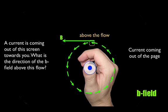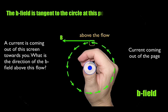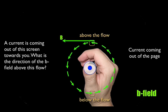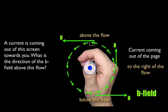You can also ask about other positions around this flow. Below the flow, the B-field is tangent to the circle going from left to right. To the right of the flow, it's tangent to the circle pointing upward. And to the left of the flow, it's tangent to the circle pointing downward.